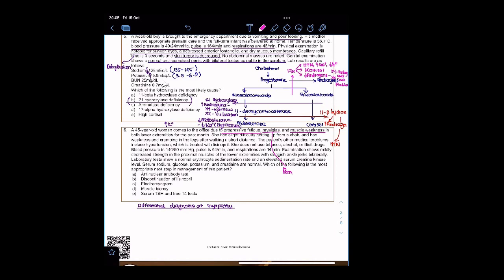Both lower extremities for the past year. She has slight difficulty getting up from a chair and has weakness and cramping in the legs after walking a short distance. The patient has problems including hypertension. Examination shows mildly decreased strength in the proximal muscles of the lower extremities with sluggish ankle reflexes.